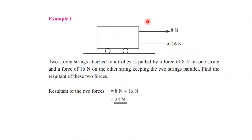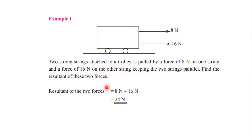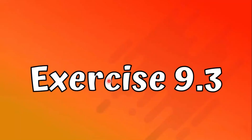Example 1: two strong strings attached to a trolley are pulled with forces of 8 Newtons and 16 Newtons, keeping the two strings parallel. Find the resultant of those two forces. Since both forces act in the same direction, the resultant = 8 N + 16 N = 24 Newtons.